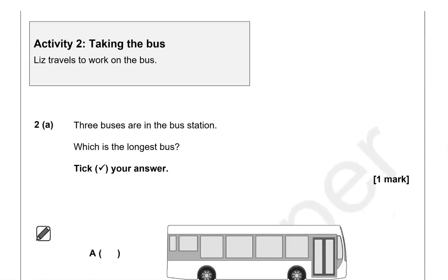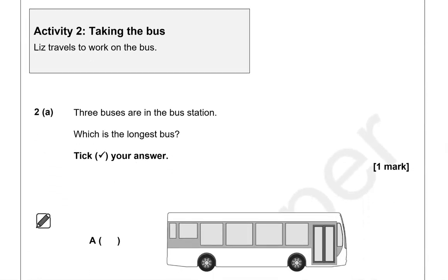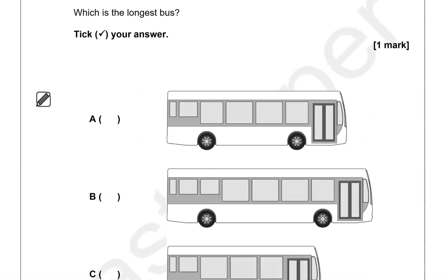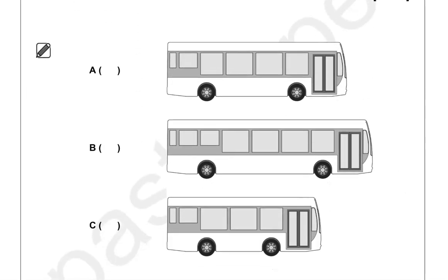Activity 2: Taking the bus. Three buses are in the bus station. Which is the longest bus? Tick your answer. Looking at all three of them, this one seems to be the longest, so it's going to be option B.